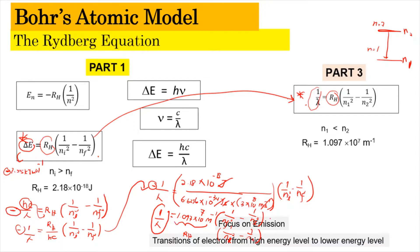Basically, they are the same thing but used for different purposes. If you are using delta E, which refers to energy, you need to use the RH value in joules. Meanwhile, 1 over lambda is used when finding wavelength or wave number, and the RH value must be in units of per meter. That is the relationship between the two forms.